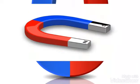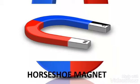A horseshoe magnet is a magnet made in the shape of a horseshoe. At the ends of its legs, the magnet has two magnetic poles close together. This shape creates a strong magnetic field between the poles.